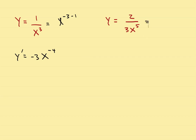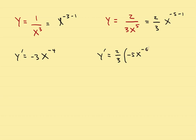If you have a problem like 2 thirds over x to the fifth, bring the x to the fifth up — so this becomes 2 thirds times x to the negative 5. If you have an x in the bottom, bring it to the top and make it negative. Now find the derivative y prime: here's the constant 2 thirds, and the derivative of x to the negative 5 is negative 5x to the negative 6. The final answer is negative 10 thirds x to the negative 6.